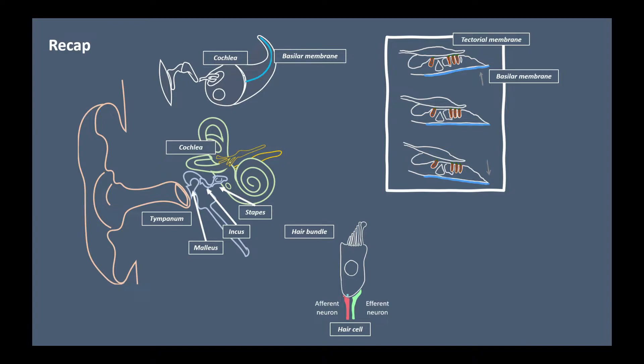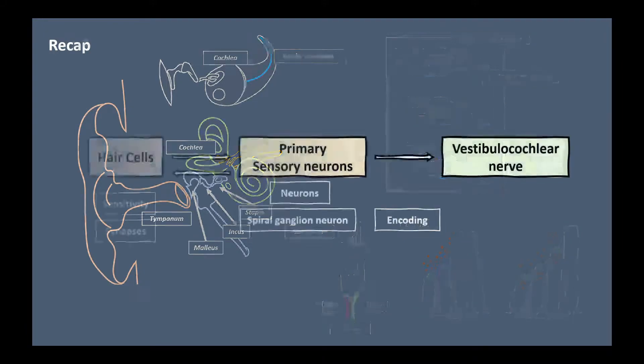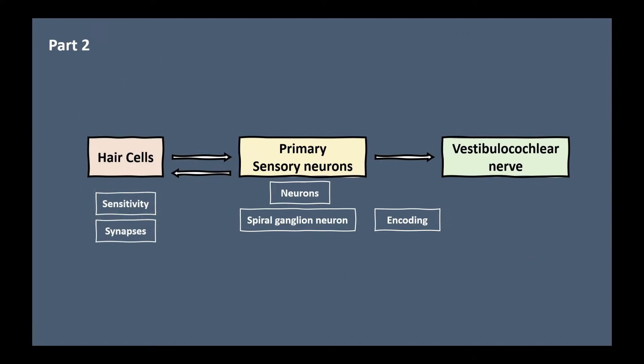Until here the sound energy is still mechanical information, but from the deflection of the hair bundles their ion channel is activated by gating spring mechanism. And this is the transduction from the mechanical information to electrical information. Okay, this was part 1. Now in the second part I will talk about some specialty of the hair cells and how they send the information of the sound to the sensory neurons.